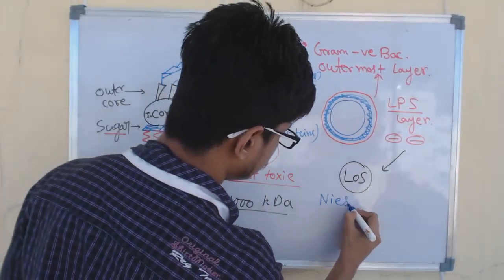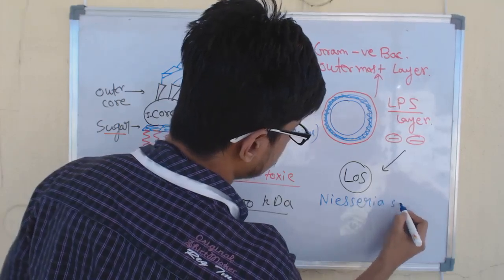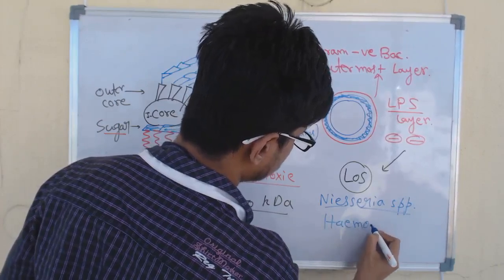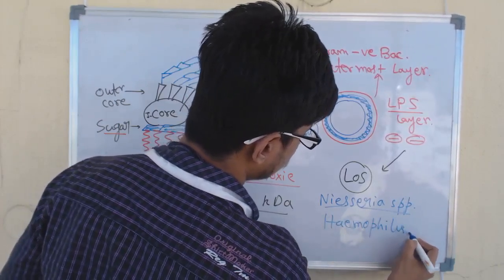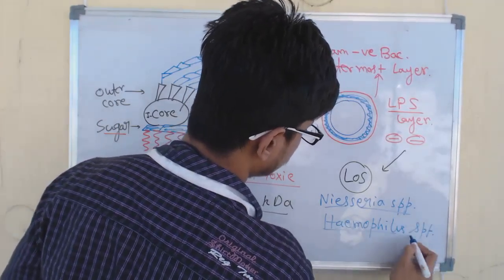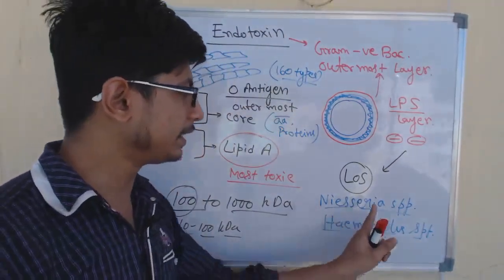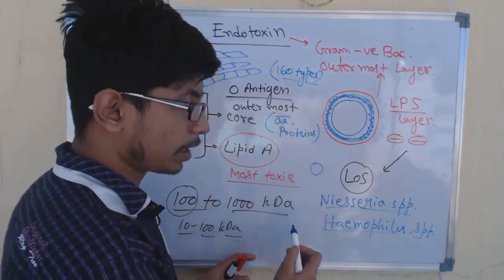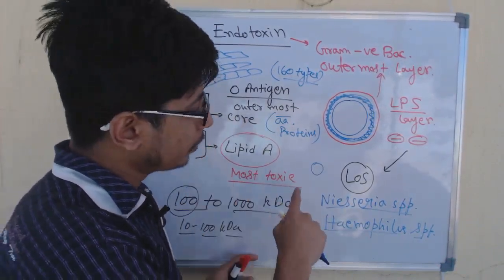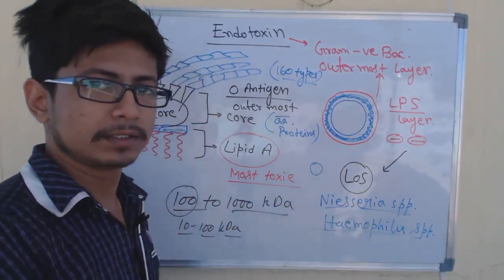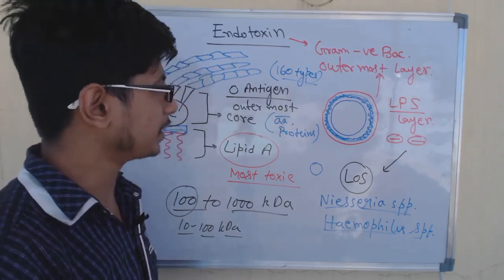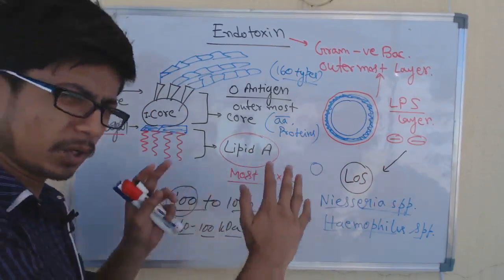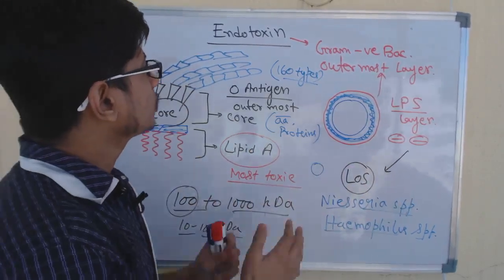Examples of lipooligosaccharide are found in Neisseria species and Haemophilus species. You know, Neisseria is a gram-negative cocci, very small, tiny. You find them in this type of gram-negative bacteria—they have LOS layer. The difference is just in the molecular weight; the rest of the thing is more or less the same.